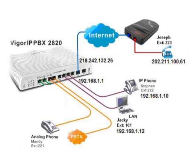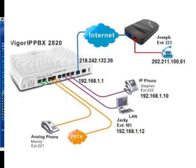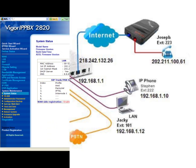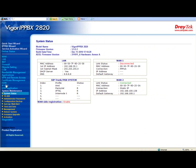We also have a PSTN line connected to the IP PBX. The first step in adding the extension numbers to the IP PBX is to go to the IP PBX extension profile configuration menu.